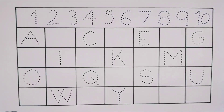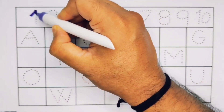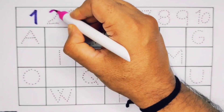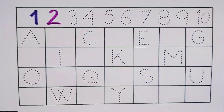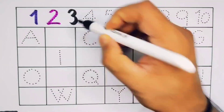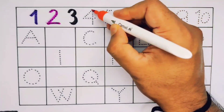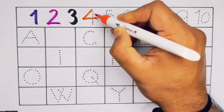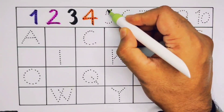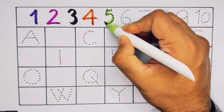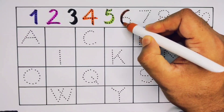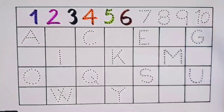Number one. Next it's number two. Next it's number three. What comes next, kids? It's four, number four. Next it's number five, number five.